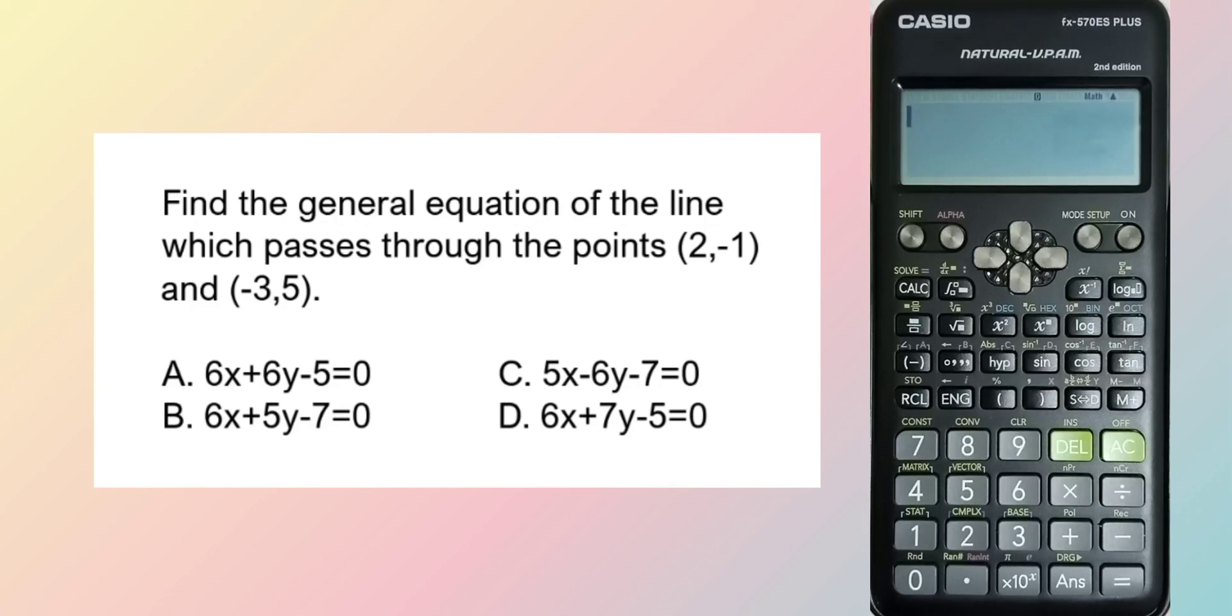Find the general equation of the line which passes through the points (2,-1) and (-3,5). So let's input all the choices.